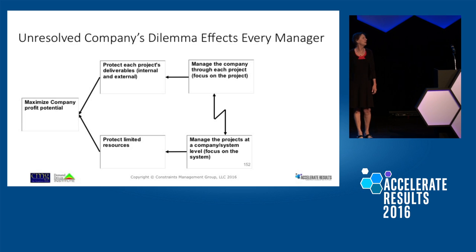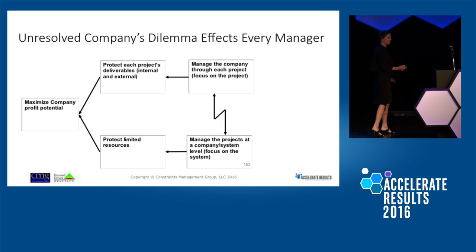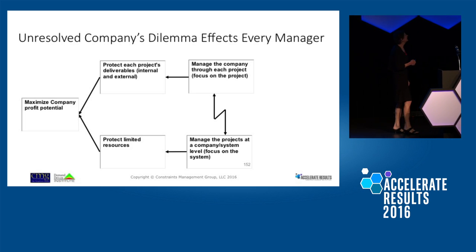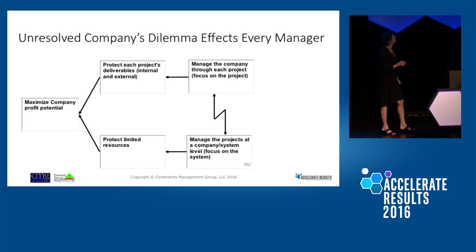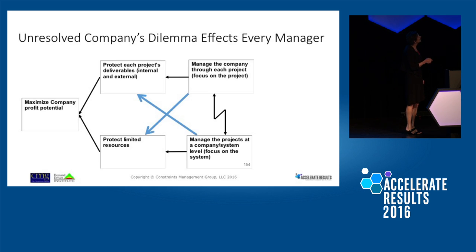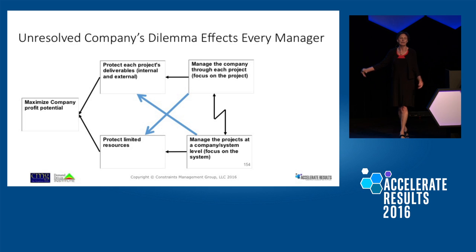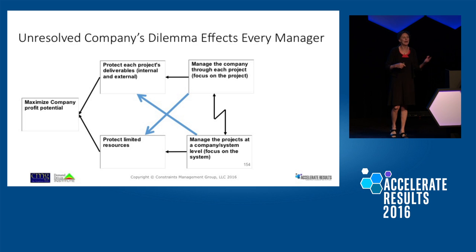We put this into a logical diagram of conflict. We took all of that giant mass of everybody and put them into a system that said: in order to maximize company profit potential, I must protect each project's deliverable, both internal and external. These guys do underground piping for Disney World, the largest cool water facilities in Dubai — they specialize in piping that moves caustic, very cold, or very hot materials through massive projects. So it's not the piping in your bathroom.